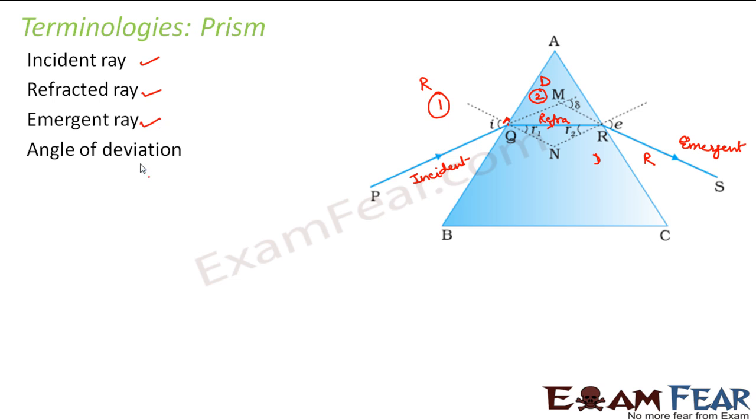Similarly, we have something called angle of deviation. Angle of deviation is that angle by which the incident ray gets deviated because of the prism. Let us suppose if there had been no prism. In that case, the incident ray would have gone straight like this. Now since prism is there, the ray got deviated in this direction because of the presence of this prism. So the angle formed by this emergent ray with the incident ray is known as the angle of deviation. So the angle by which the incident ray gets deviated because of the presence of the prism is known as angle of deviation and it is generally denoted by delta.